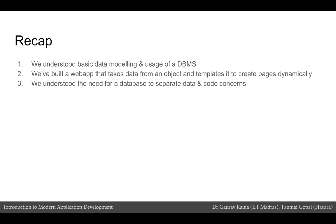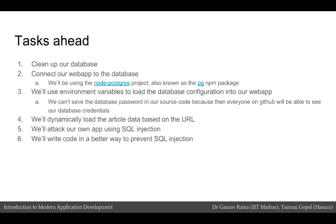So far we have understood how to do basic data modeling and how to use a DBMS. We have also built a web app that takes data from an object inside the source code and uses that data to create templates so it can render pages dynamically. We have understood that we need to separate data and code concerns and why a database is required for a typical web application. We are now going to take this combined knowledge and actually build an application that connects to the database.